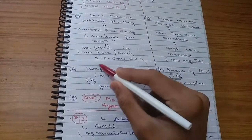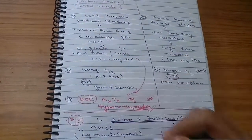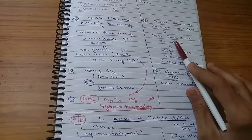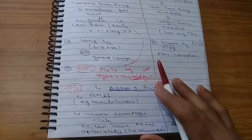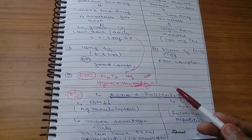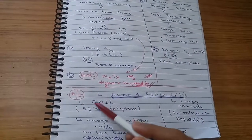Carbimazole is drug of choice for maintenance treatment of hyperthyroidism due to its long half-life and less requirement. Propylthiouracil is drug of choice for thyrotoxicosis.